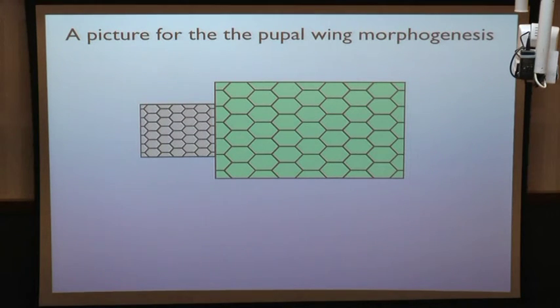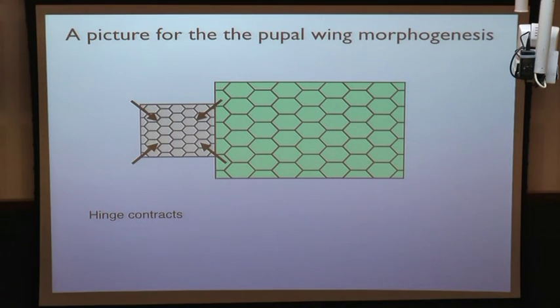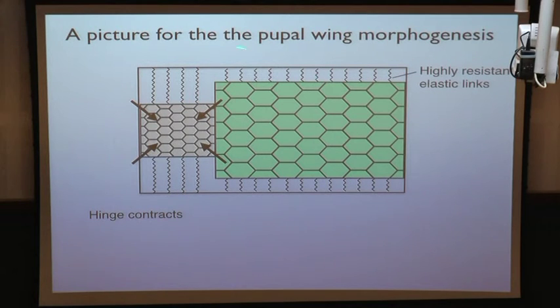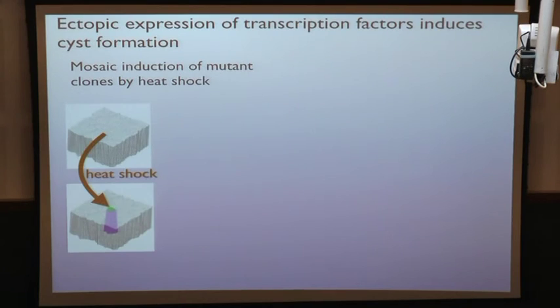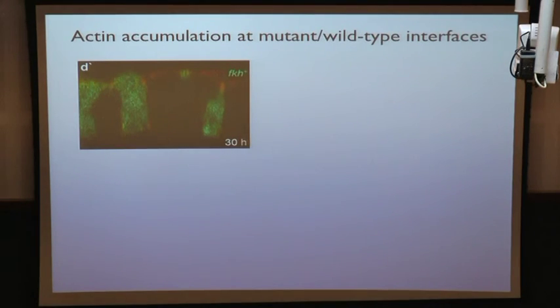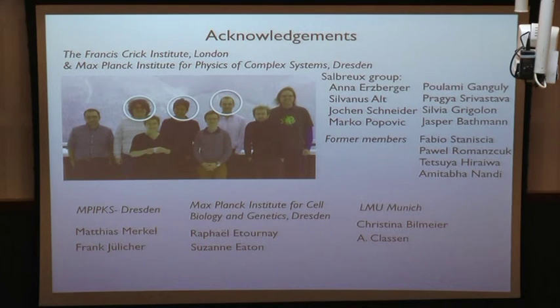To summarize: in pupal wing morphogenesis, several processes operate simultaneously. The hinge constricts, exerting an external force that partly drives blade elongation. External elastic links — the Dumpy protein matrix — are essential in controlling tissue shape. And internal tissue processes, including active T1 transitions driven by planar polarity, play a role in setting cell shape. This work was done by Marko and Amitaba, together with collaborators. Thank you for your attention.